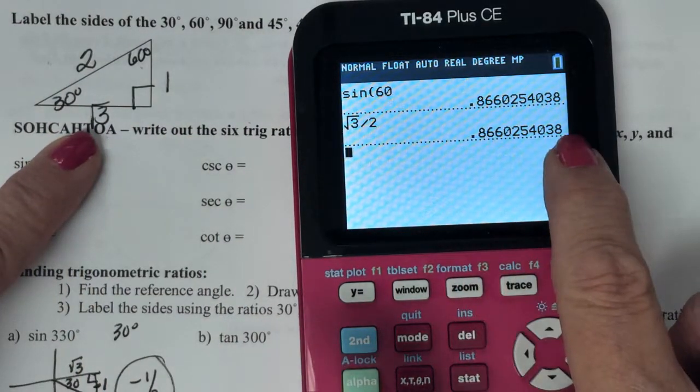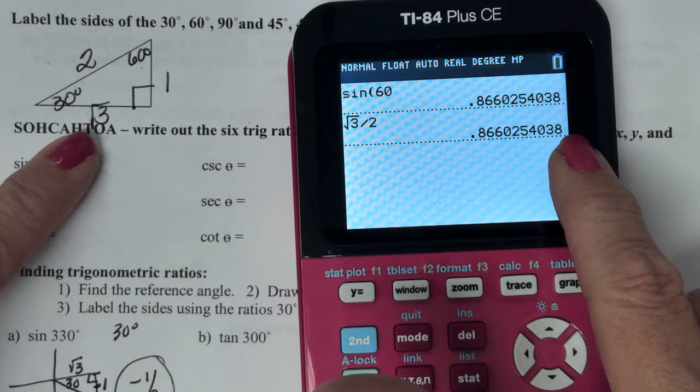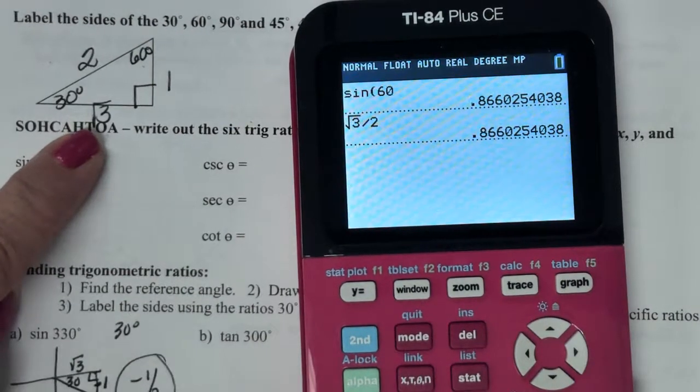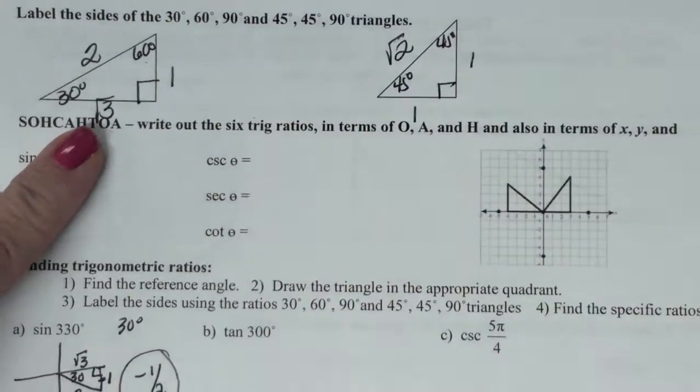It's a special type of number, radical three. Anybody know? Irrational. Irrational numbers go on forever. They never stop. They never repeat.